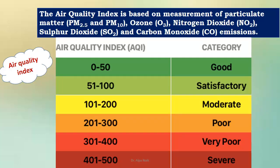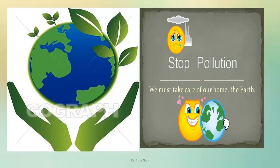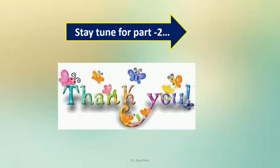The Air Quality Index: 0 to 50 is good air; 51 to 100 is satisfactory; 101 to 200 is moderate. But as it crosses above 200, the air quality is very poor and it is not advisable for human beings to stay there. We need to check the Air Quality Index. This is our beautiful planet Earth — we need to take care of our home. Stay tuned for part 2, where we are going to discuss water pollution and soil pollution and the measures to curb these pollutions. Thank you so much.